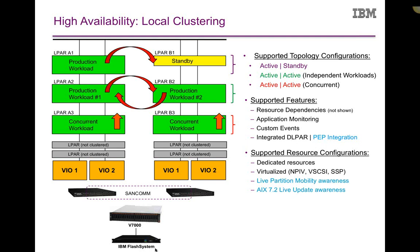With AIX 7.2, the latest release HA 7.2 also has a level of live update awareness. If you're performing a live update operation on the system hosting the production workload — the whole point being not to reboot the kernel when switching to the surrogate LPAR — you wouldn't want to trigger a failover. Just like with LPM, HA 7.2's cluster manager is aware that the live update operation has taken place. It will automatically disable things and re-enable them once complete so it does not trigger an actual failover.